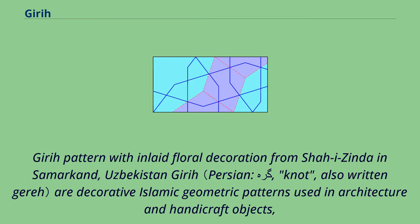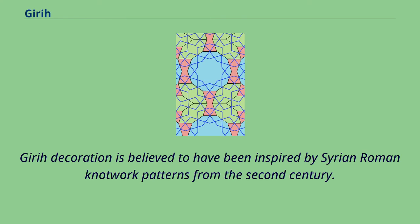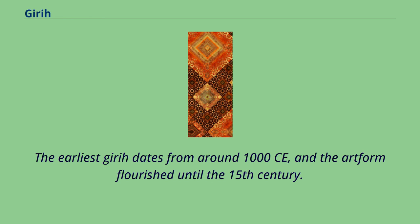Girih pattern with inlaid floral decoration from Shah-i-Zinda in Samarkand, Uzbekistan. Girih are decorative Islamic geometric patterns used in architecture and handicraft objects, consisting of angled lines that form an interlaced strapwork pattern. Girih decoration is believed to have been inspired by Syrian Roman knotwork patterns from the 2nd century. The earliest girih dates from around 1000 CE, and the art form flourished until the 15th century.